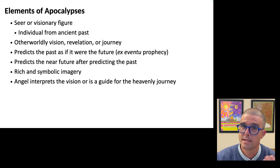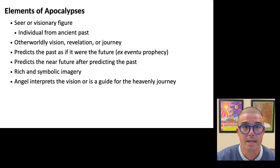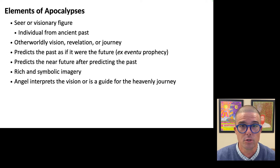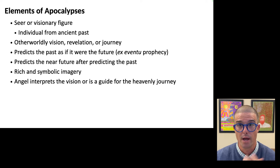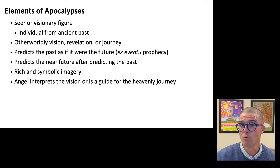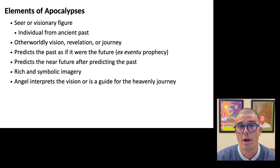The same is the case with ancient apocalypses. They possess several, but not necessarily all, of these features: a human seer or visionary figure who is usually an individual from the ancient past; this seer has an otherworldly vision, revelation, or journey; these individuals often predict the past as if the past were the future — what is called ex eventu prophecy; following this successful prediction of the past, they will often then predict the near future from the writer's perspective. Apocalypses also have rich, symbolic, and trippy imagery. And because this imagery is weird, an angel or multiple angels or otherworldly figures need to interpret it, or serve as a guide if the seer is going on a heavenly journey.